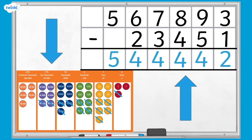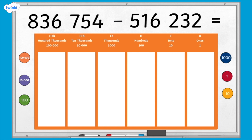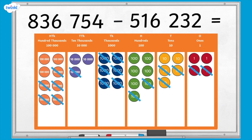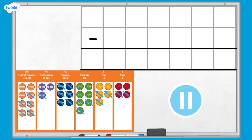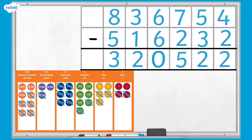Does your column subtraction answer match the place value counters left on the grid? Now I have the calculation 836,754 subtract 516,232. I'd like you to create 836,754 using place value counters on the place value grid, and then subtract 516,232 by crossing out the correct counters. Next, write the column subtraction in this empty template. Does the answer to your column subtraction match the place value counters left on the place value grid?